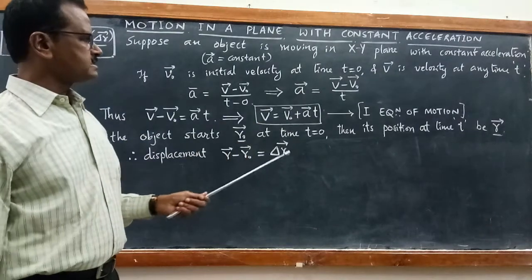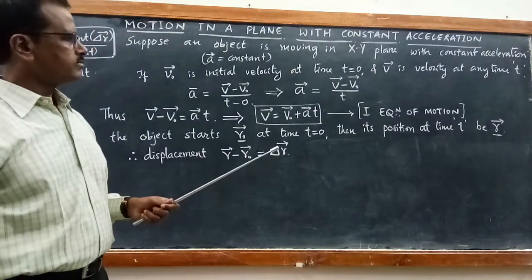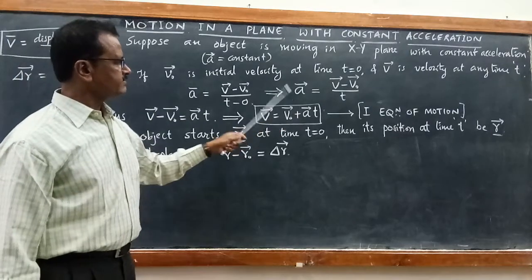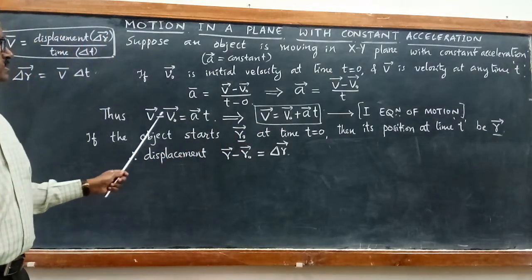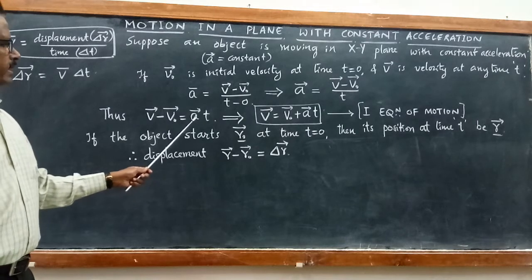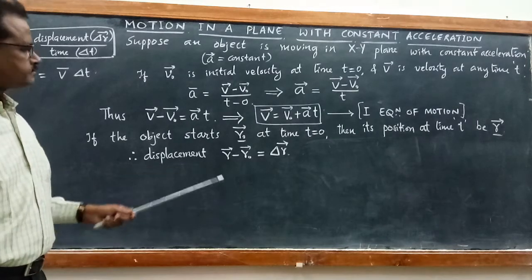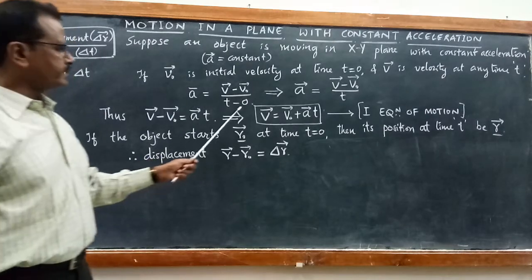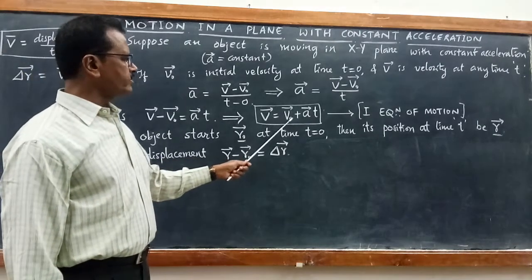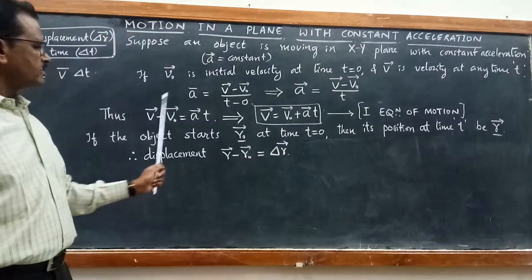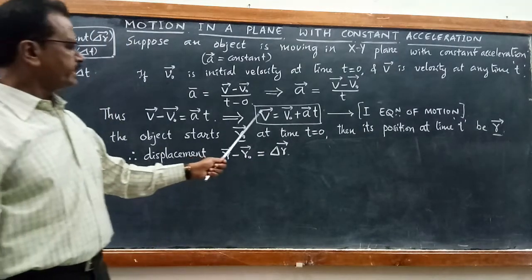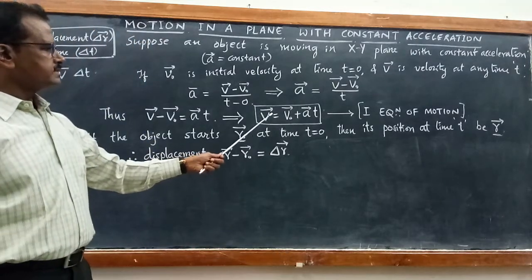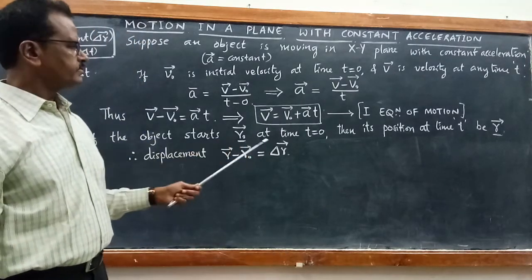This gives us the first equation of motion. Taking t to the left-hand side: vector v − vector v₀ = vector a · t, so vector v = vector v₀ + at. This is the first equation of motion.